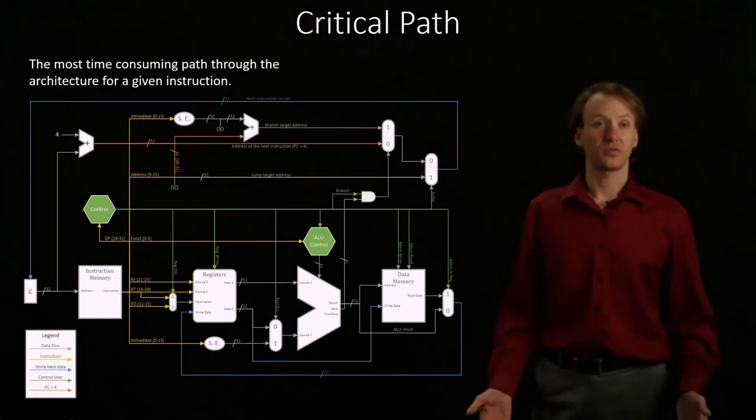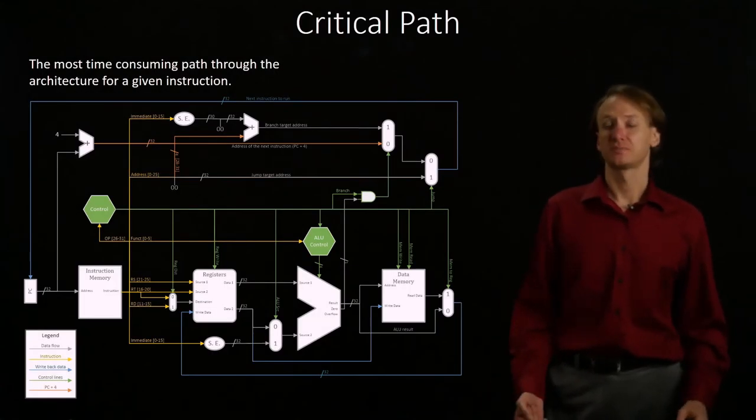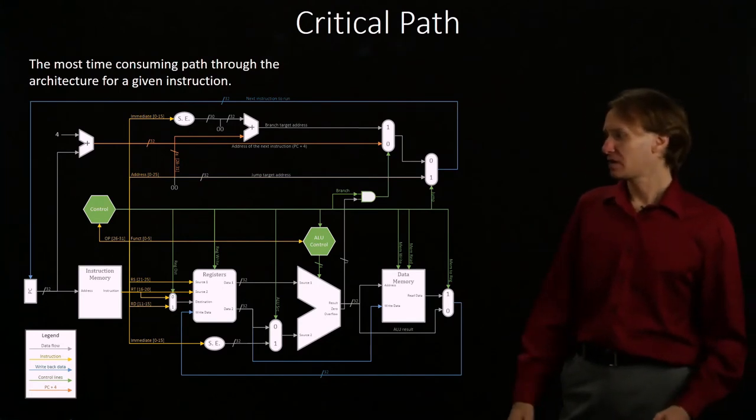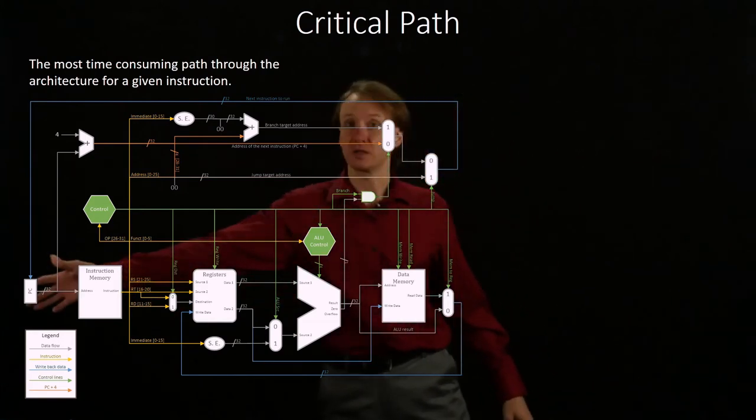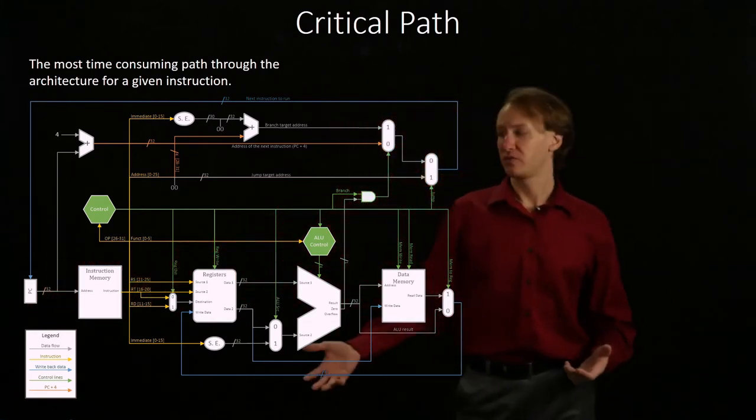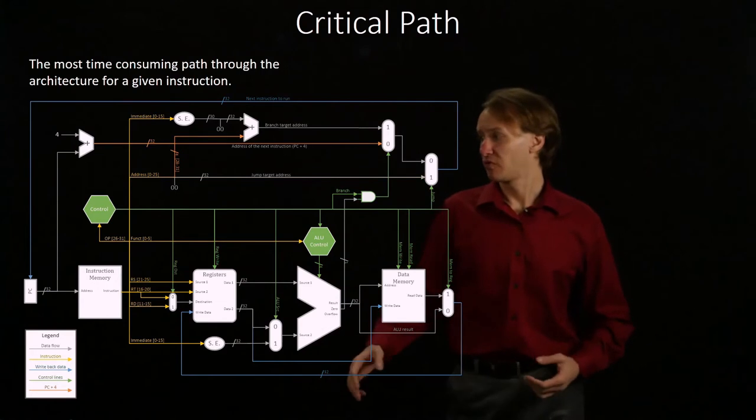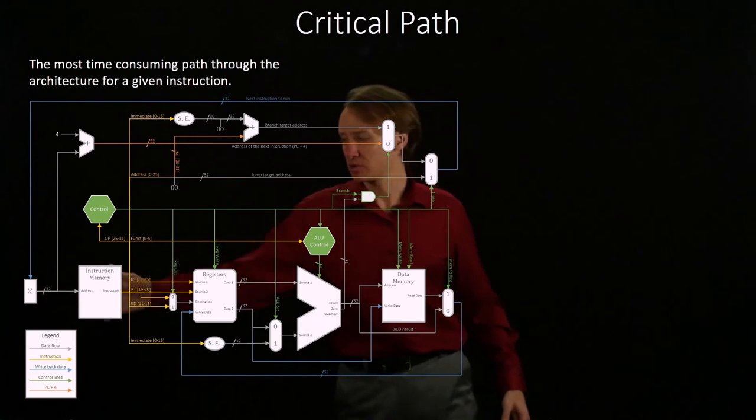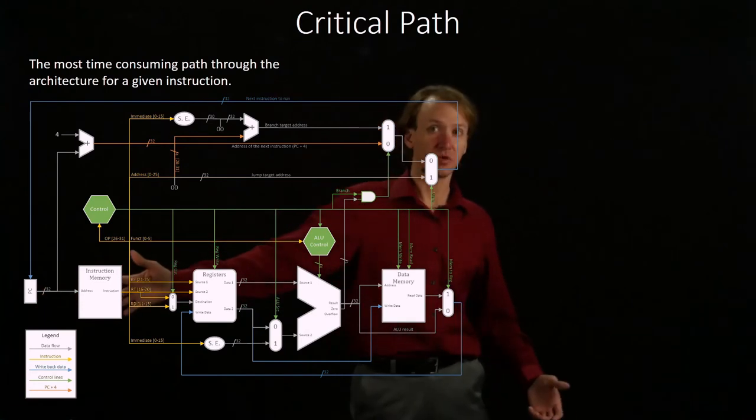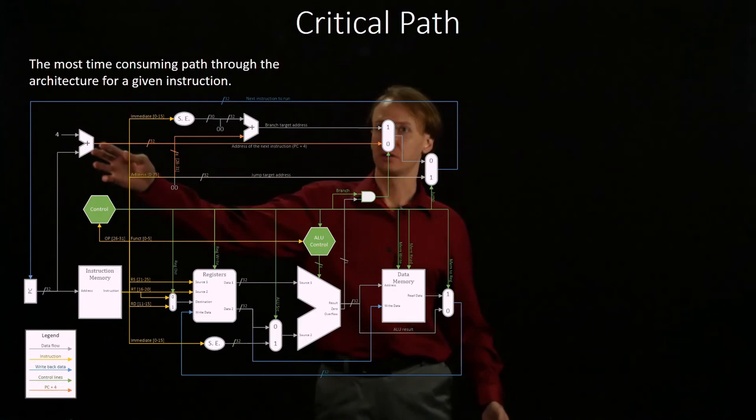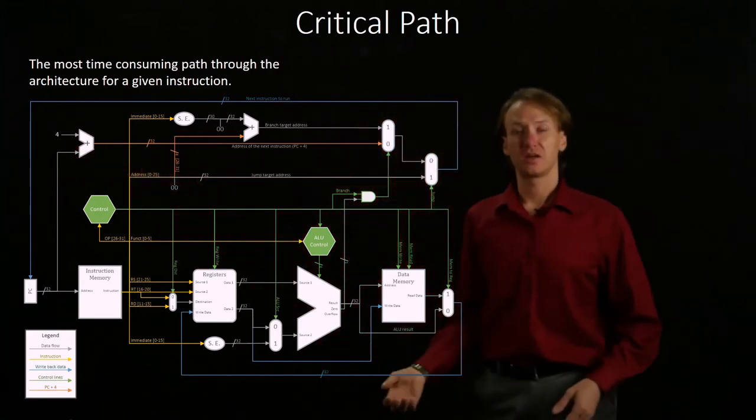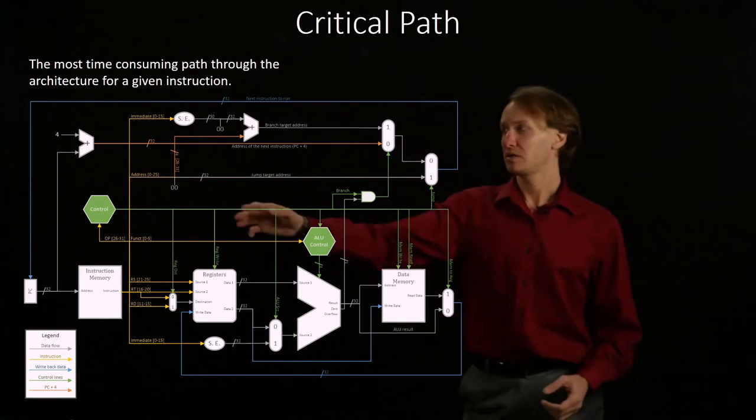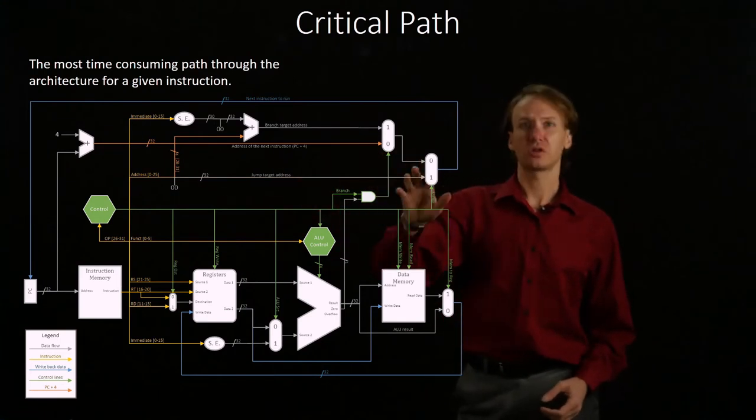This time we'll walk through the critical path for a handful of instructions. If we start with an add instruction, then our add instruction begins over at the program counter. We have to wait for the program counter to complete before we can do anything else. Once we've read the address from the program counter, it's sent over to instruction memory, but it also goes off to the adder. It would get its address incremented so it can point at the next instruction, but most of that workflow is not really going to be interesting.